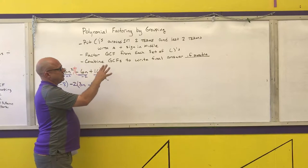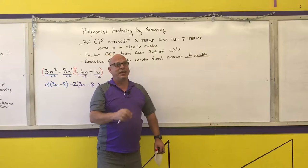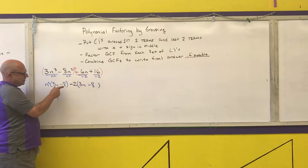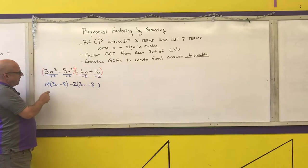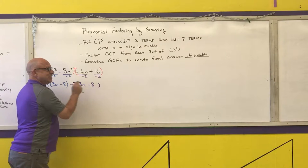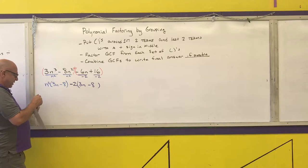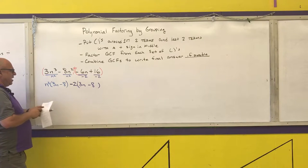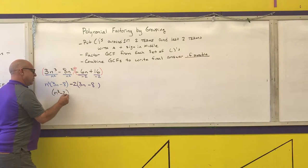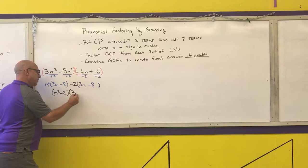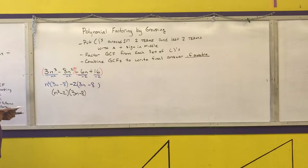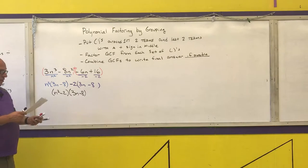Step three: combine the GCFs to write the final answer if possible. The only time it's possible is when what's inside your parentheses are identical. Here I've got n squared times something minus 2 times that same something, so I can write that as n squared minus 2, times that something. That's the basic steps for factoring by grouping.